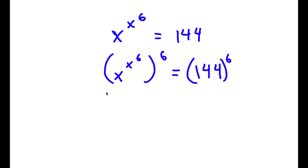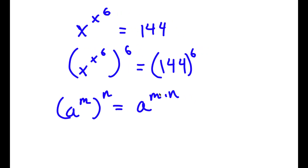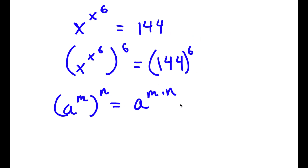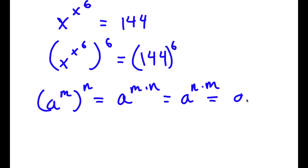Now if I have something in the form a to the power of m to the power of n, this is equal to a to the power of m times n. And m times n are interchangeable, meaning this is the same thing as a to the power of n times m. So we can write a to the power of n times m as a to the power of n to the power of m.